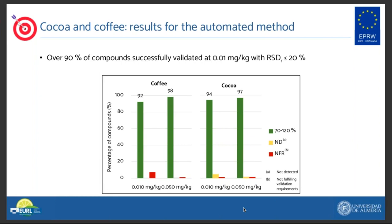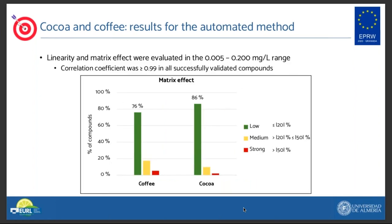A percentage of compounds with recovery values between 70 and 120% and relative standard deviations lower than or equal to 20% is 92% for coffee at 10 ppb and 94% for cocoa at the same validation level. These values increased to 98% in coffee at 50 ppb and 97% in cocoa at 50 ppb. It is worth noting that in coffee, while some compounds did not fulfill the validation requirements, all of them could be detected in the instrument. Regarding matrix effect and linearity, studied in the 5 to 200 ppb concentration range, all compounds which complied with the recovery and RSD requirements were also linear in this range with squared correlation coefficients higher than 0.99. Over 75% of all validated compounds presented no matrix effect, and less than 20% presented a moderate matrix effect.